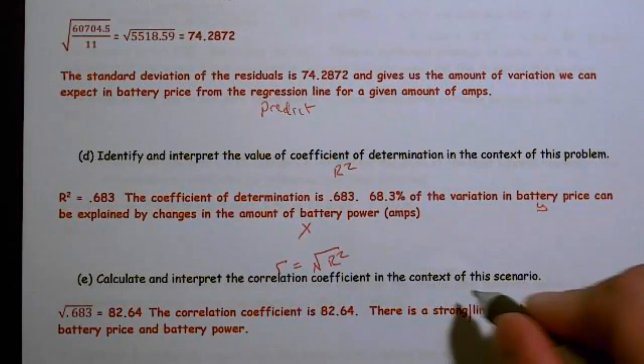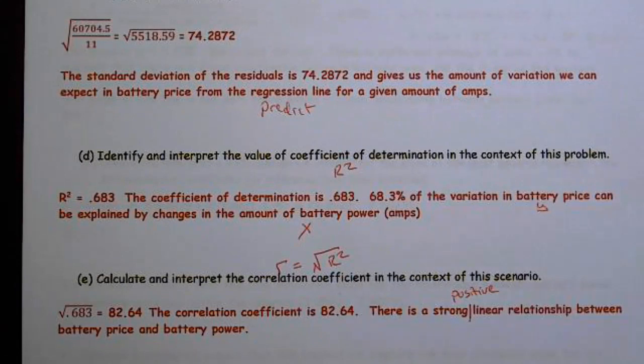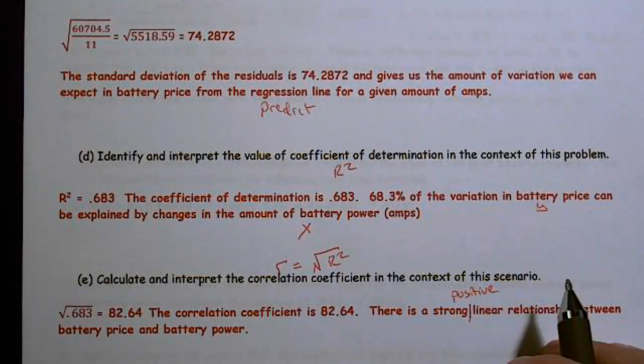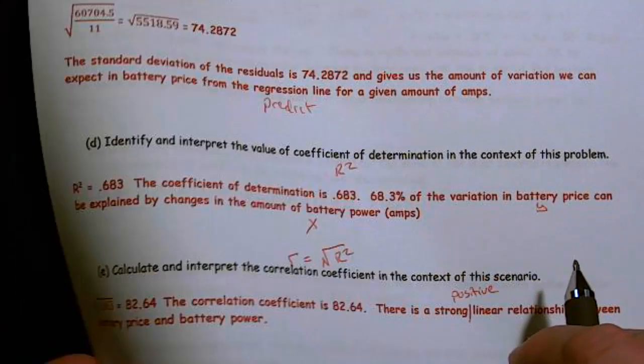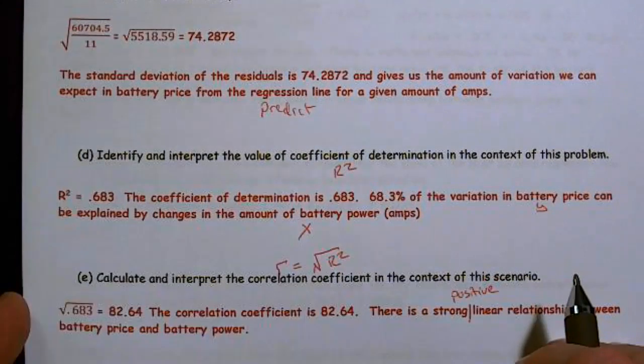So there is a strong, and there's a word missing. I've got to have this word, positive. If you don't have direction, you're going to lose half credit. There's a strong positive linear relationship between battery price and battery power. So please make sure that you have the direction listed. Otherwise, you're going to go from full credit to partial.